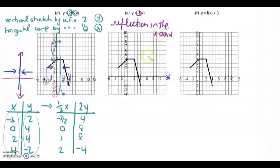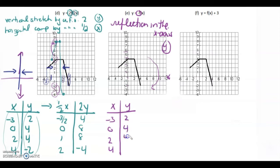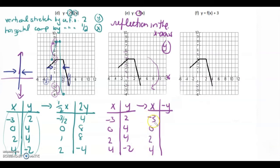A reflection in the x-axis will reflect it downward, so it affects the y values. Let's write out the original numbers: negative 3, 0, 2, 4 for x, and 2, 4, 4, negative 2 for y. The x's stay the same, and the y's are negated — multiplied by negative 1. So we get: 2 becomes negative 2, 4 becomes negative 4, 4 becomes negative 4, and negative 2 becomes positive 2.